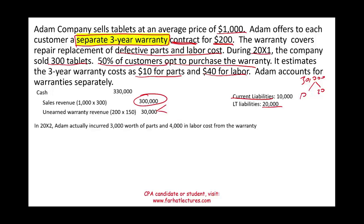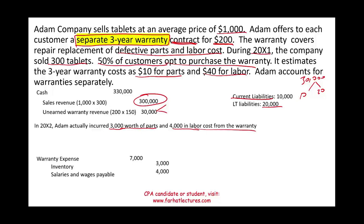Now let's assume in 20x2 Adam Company actually incurred three thousand dollars worth of parts and four thousand dollars in labor from warranty claims. Customers came back and had their tablets repaired. Since we incurred three thousand in parts, we credit inventory three thousand. The labor cost is four thousand, and we debit warranty expense for a total of seven thousand dollars.